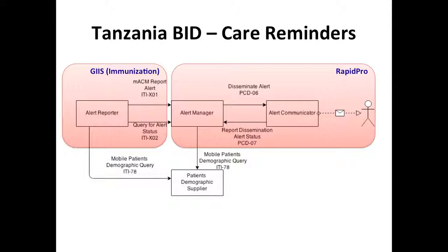In Tanzania, one example use case is an immunization database that has a list of defaulters — people who have not received their immunizations on schedule. We would issue a Report Alert against the Alert Manager to send out an alert saying they should come in for their appointment. This is actually happening now, just without a standard. As MACM gets published, we will be switching to using this as a standard.